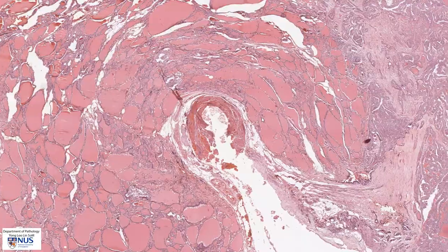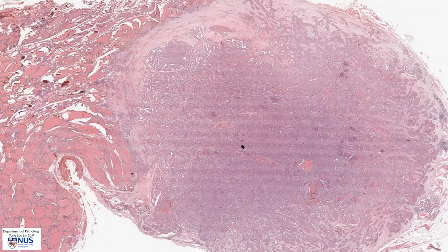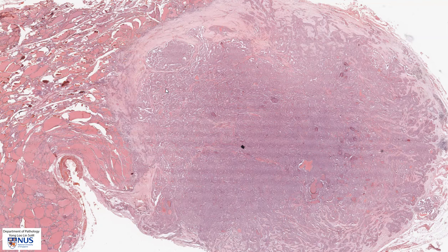Let's move on to the tumor. We can see that this tumor is not encapsulated. There is a fibrous area here, but there is tumor present both within the main tumor mass as well as right at the outer edge of this fibrotic area. And at low magnification, there appears to be these papillary-like structures.